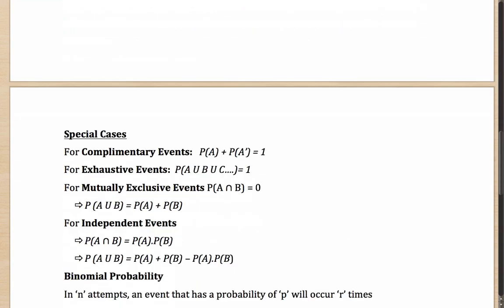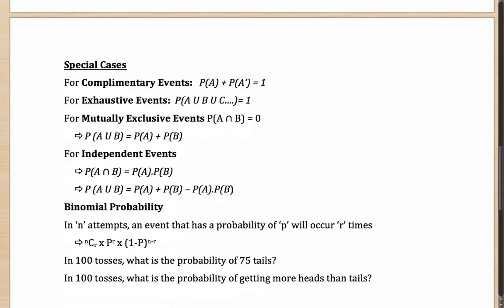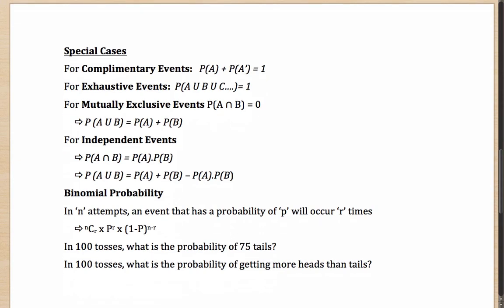Moving on to special cases in probability. First, what are complementary events? If A hitting a target is an event, then its complementary event would be A missing the target. If probability of A passing an exam is three by five, then probability of A failing the exam is two by five — and these are complementary events. The probability of an event plus the probability of its complement will always be equal to one.